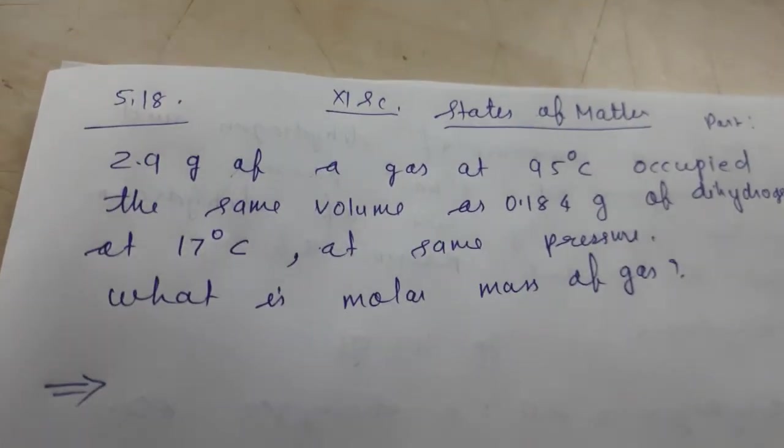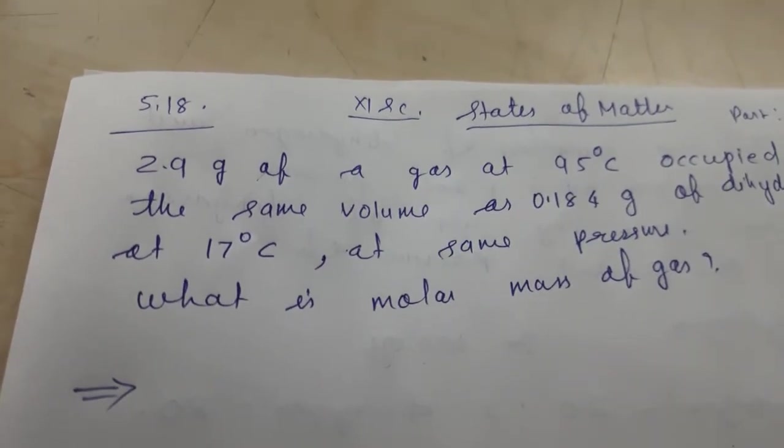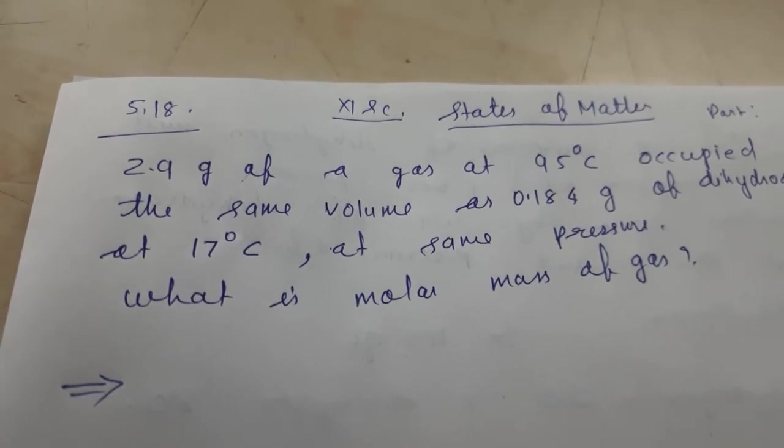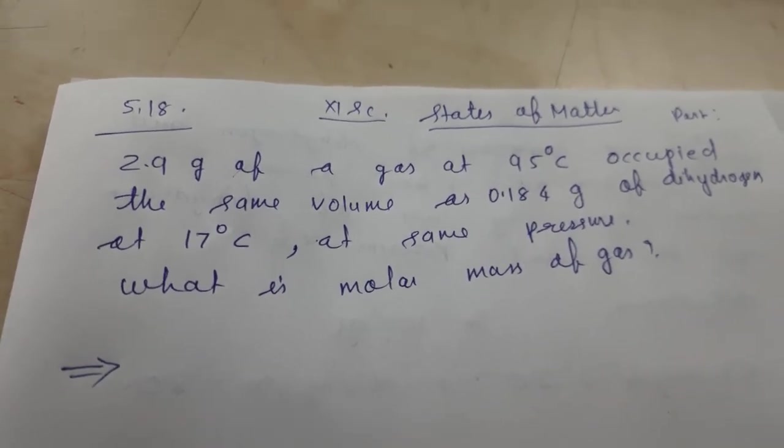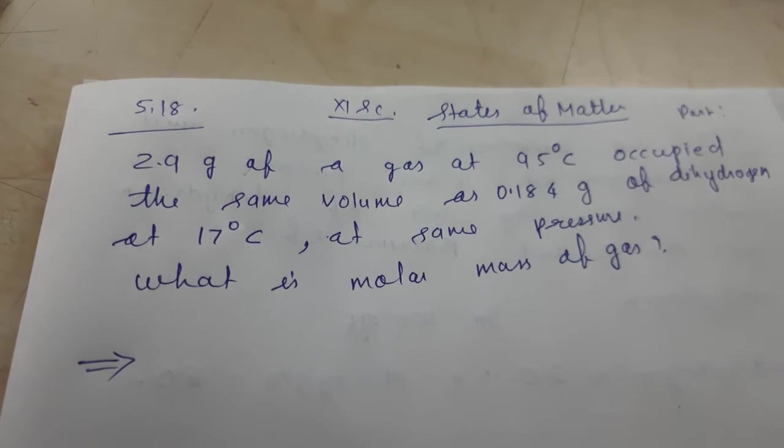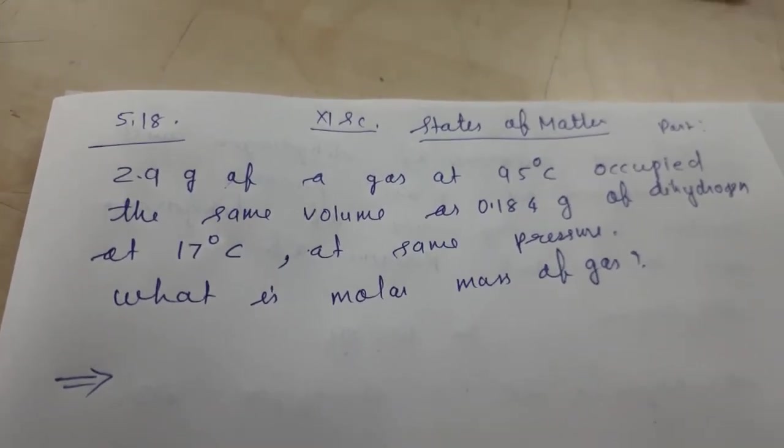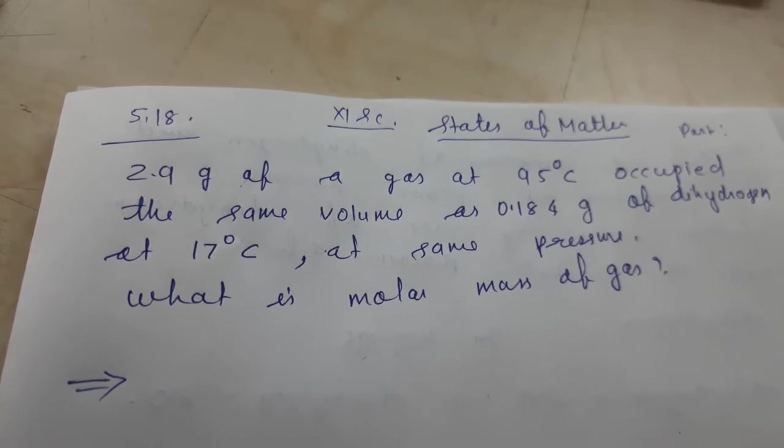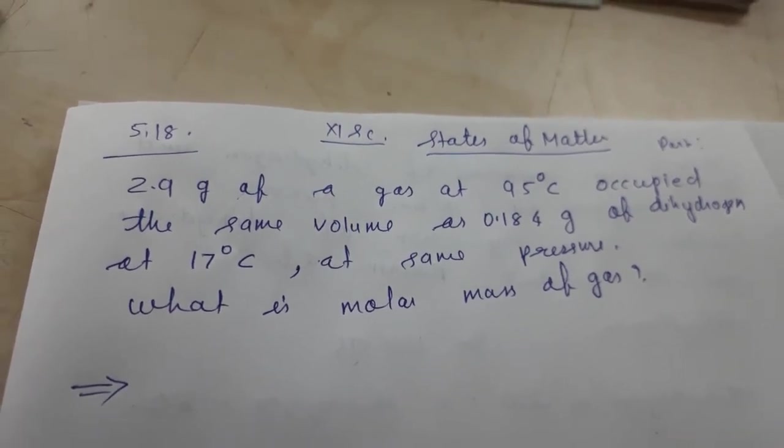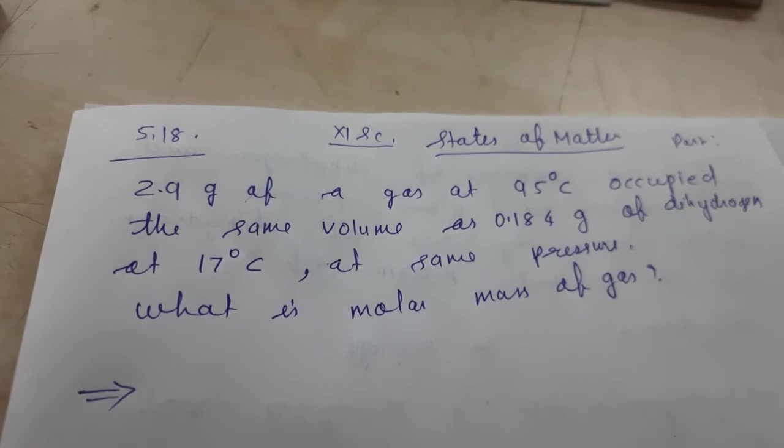Good morning children, today I will explain to you numerical problems 5.18, 5.19 and 5.20. First, numerical 5.18: 2.9 grams of a gas at 95 degrees Celsius occupied the same volume as 0.184 grams of dihydrogen at 17 degrees Celsius.